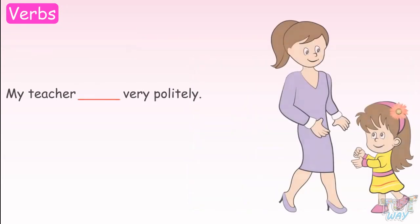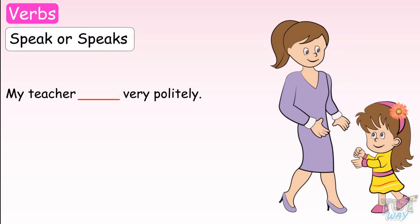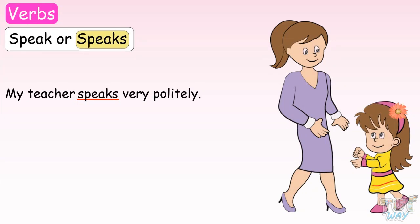Let's see one last example. My teacher ___ very politely. We have to choose one out of the two words: speak or speaks. We have to place the verb after a singular noun, my teacher. So the verb will end in S or ES, and we will choose speaks. My teacher speaks very politely.